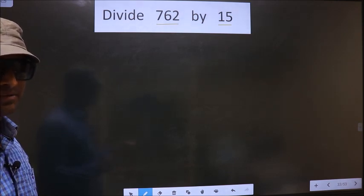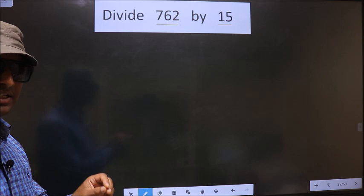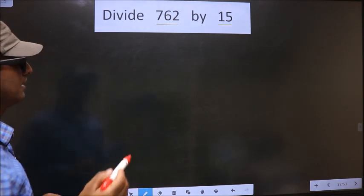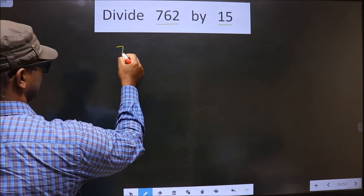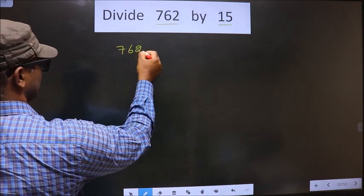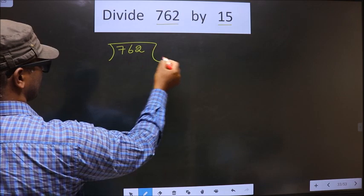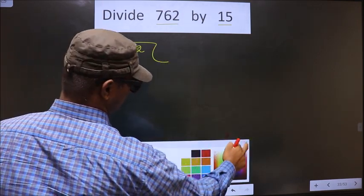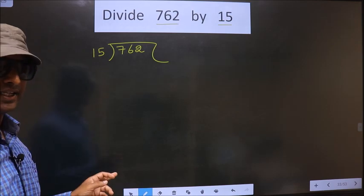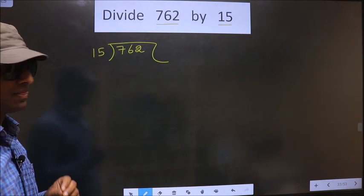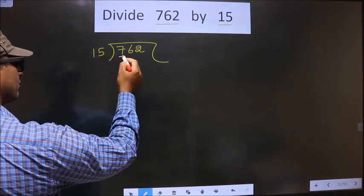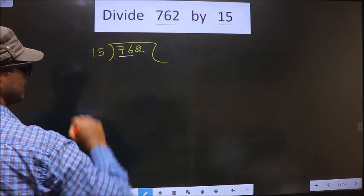I will tell, but before that, first we should frame it in this way. See, that is 762 divided by 15. Here we have 7. 7 is smaller than 15, so we take two numbers, that is 76.